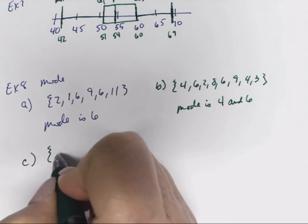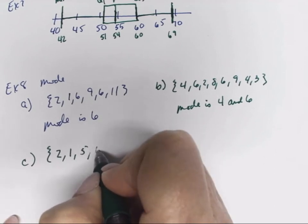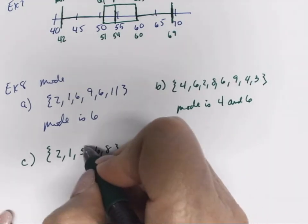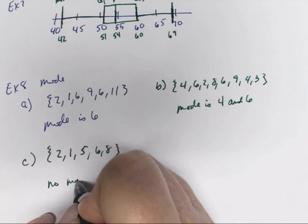If we look at this set, we have 2, 1, 5, 6, and 8. None of them repeat at all. They all have one time of occurrence, so this will have no mode.